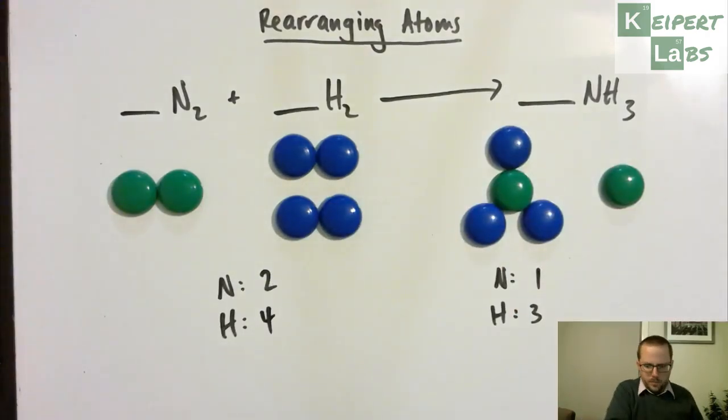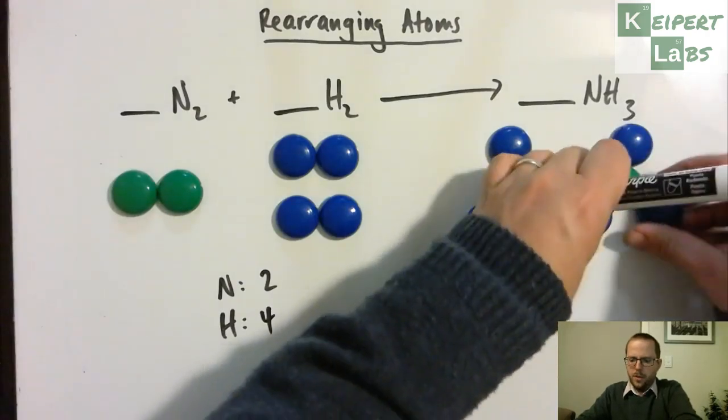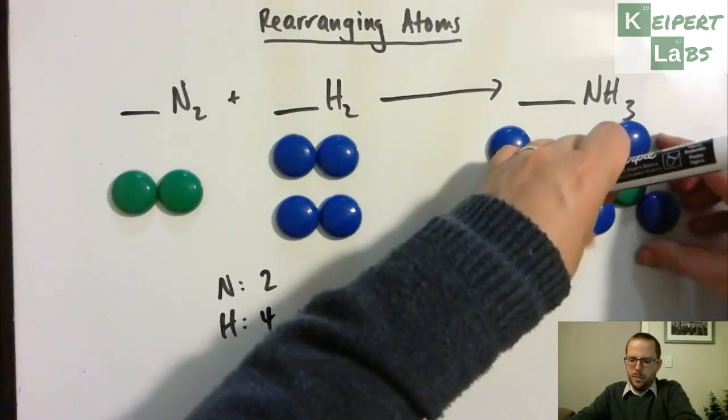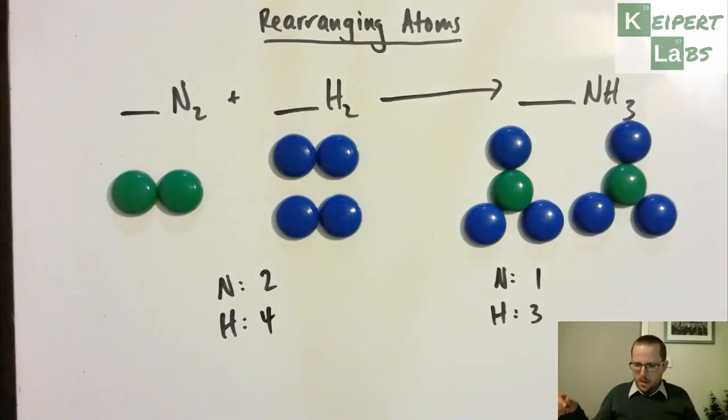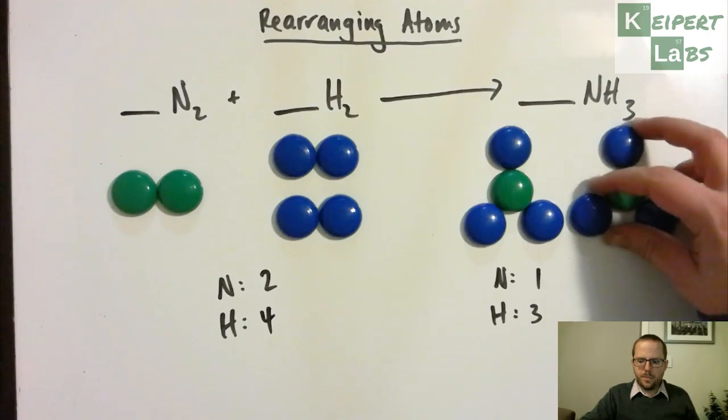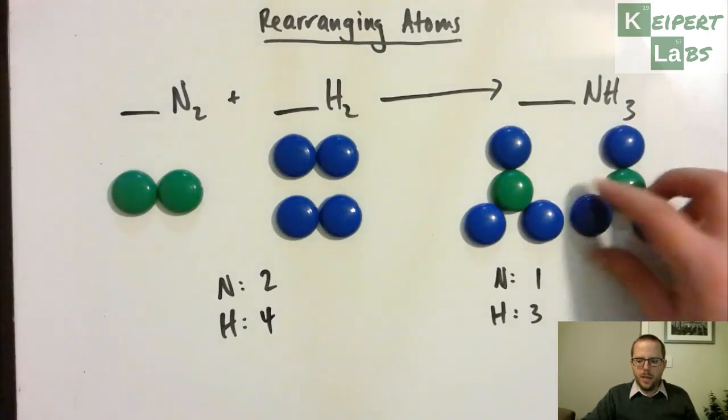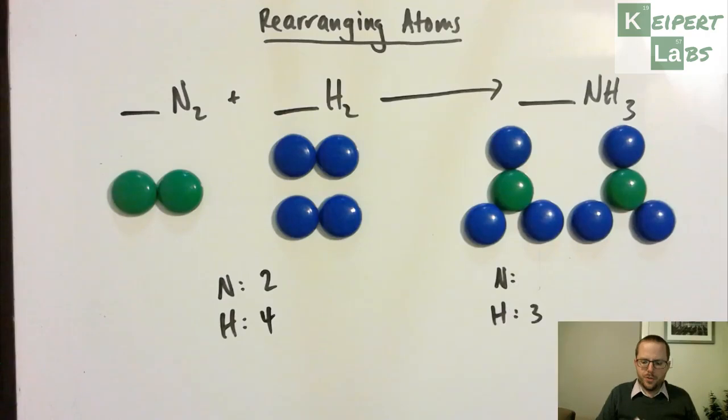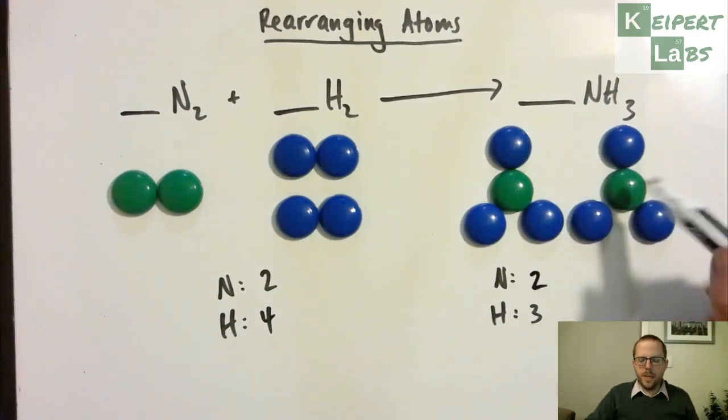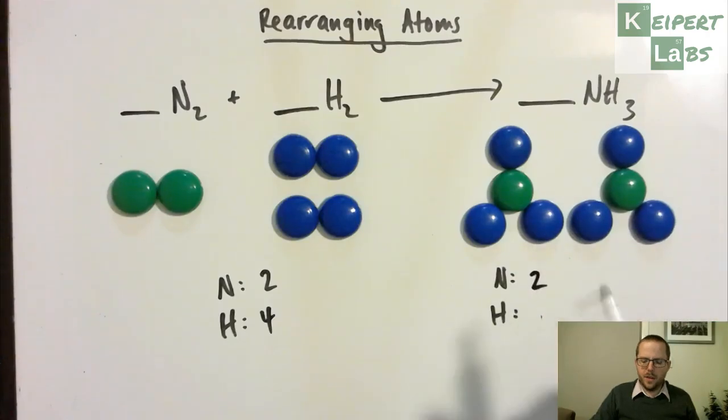But I also recognize that I need to have, I have two nitrogens here, but I've only got one here. So at very least, I need a second molecule of this over here. Hopefully I'm not going to need any extra blues because I'm running out of space. And yet, that's going to be a problem. So what I've done here, bear with me for a moment, is I now have two nitrogens.